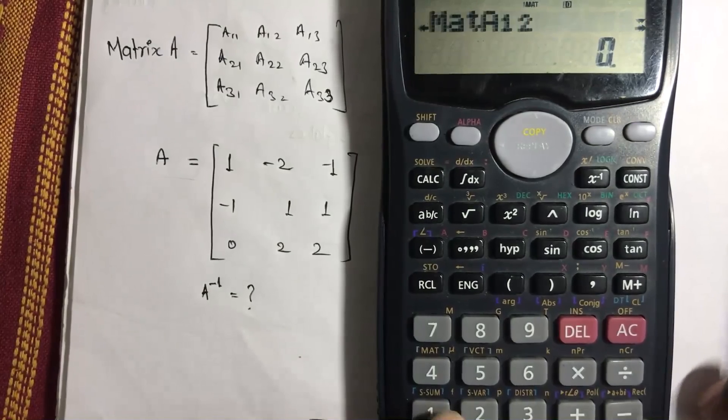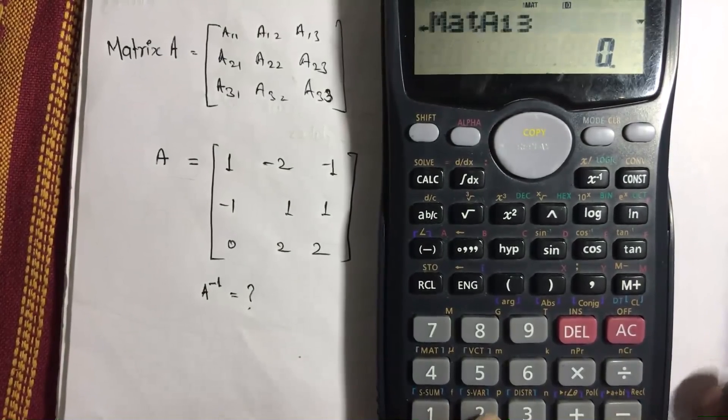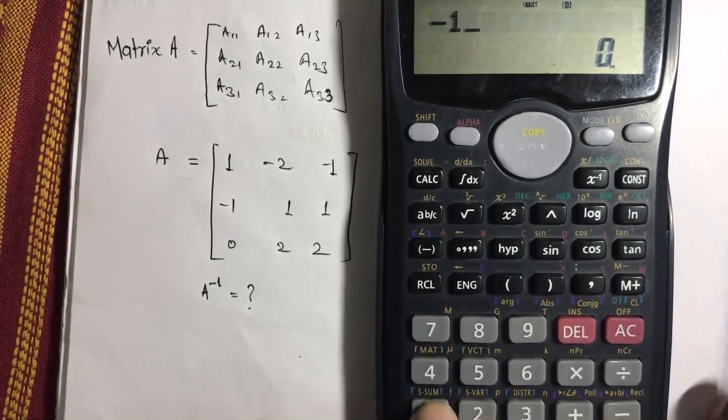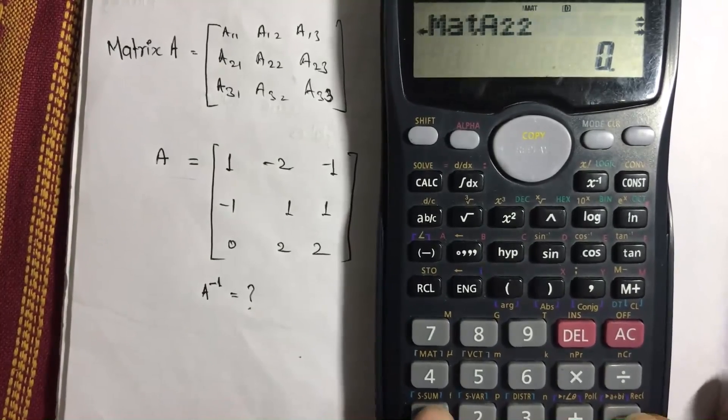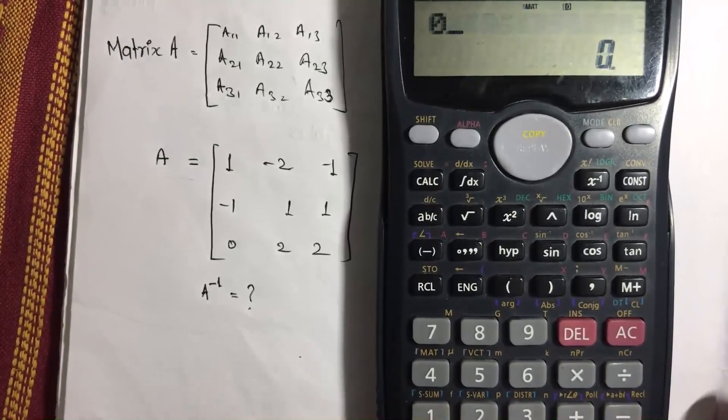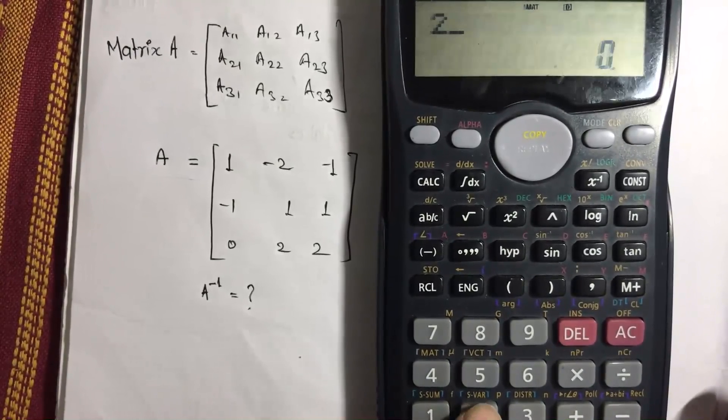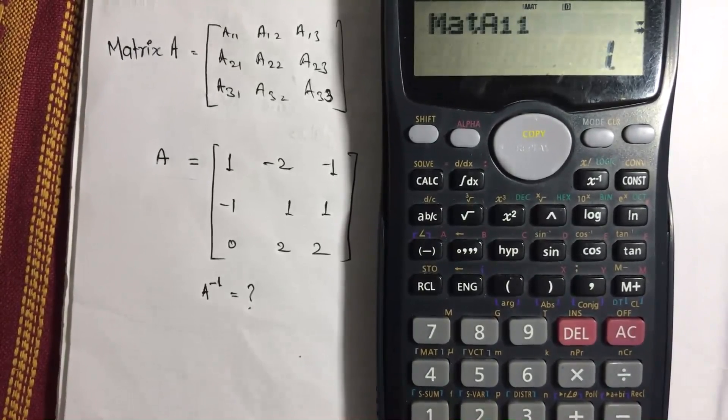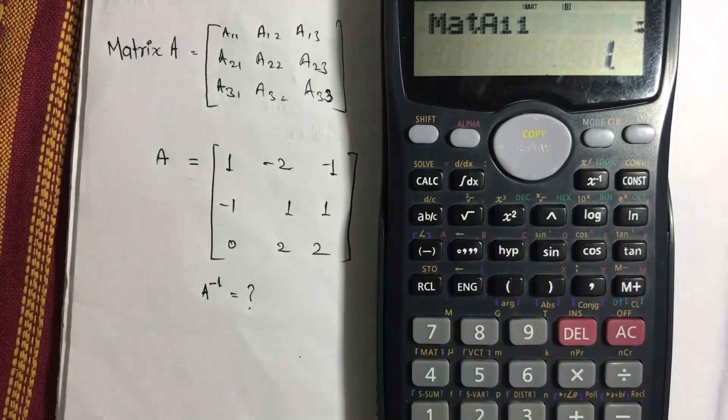Equals to, minus 2, equals to, minus 1, equals to, minus 1, equals to, 1, equals to, 1, equals to, 0, equals to, 2, equals to, 2. So here is the matrix A inserted with the values.